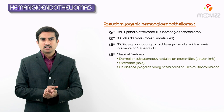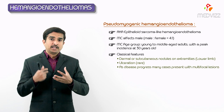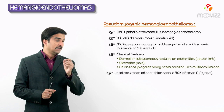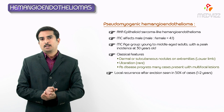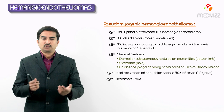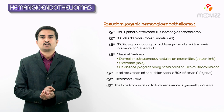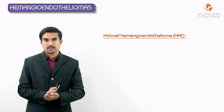Depending on the number of nodules, ulceration, and anatomical area, we can identify the severity of pseudomyogenic hemangioendothelioma. Local recurrence after excision occurs in approximately 50% of cases, but metastasis is very rare. The time from excision to local recurrence is generally 1 to 2 years, and this tumor is not generally fatal.